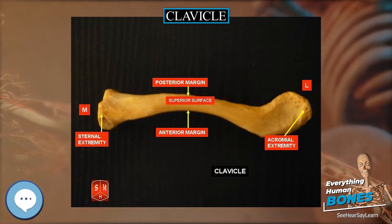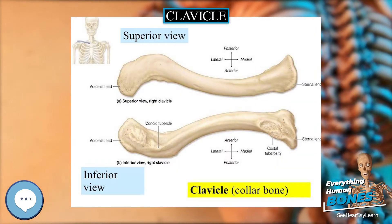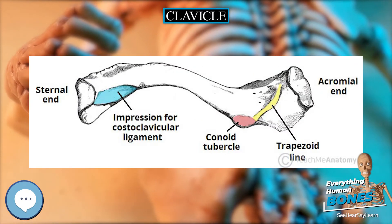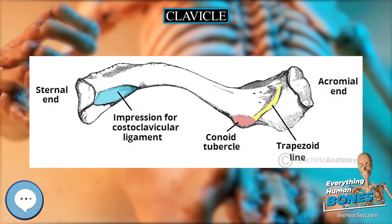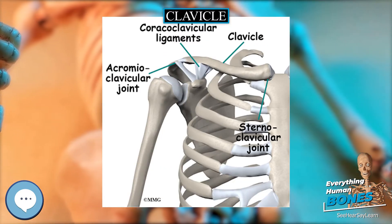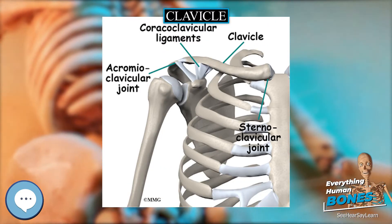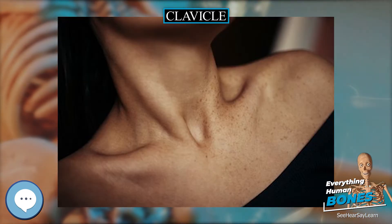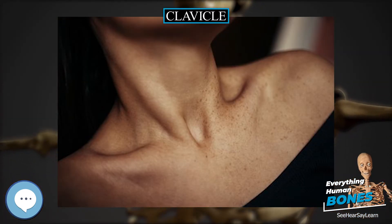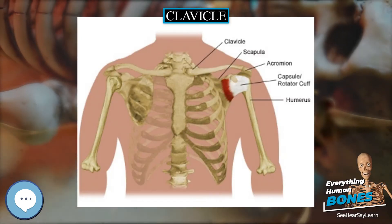The flat acromial end of the collarbone is broader than the sternal end. The acromial end has a rough inferior surface that bears a ridge called the trapezoid line, and a slight rounded projection called the conoid tubercle, above the coracoid process. These surface features are attachment sites for muscles and ligaments of the shoulder. The clavicle can be divided into three parts: medial end, lateral end, and shaft.